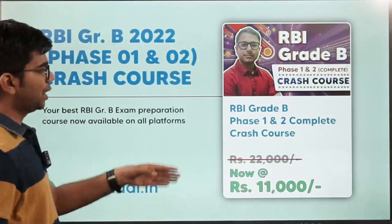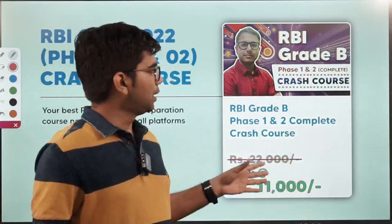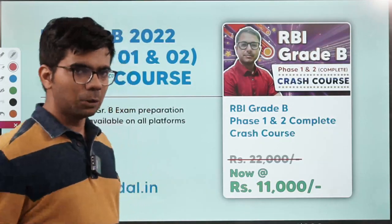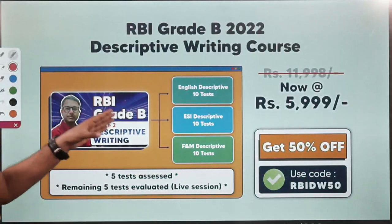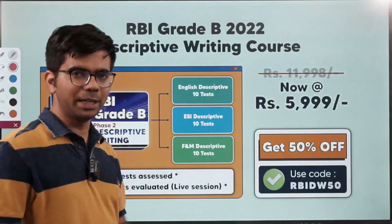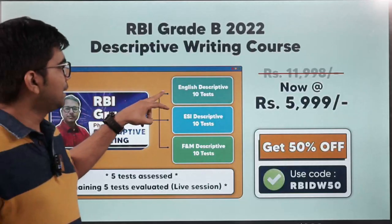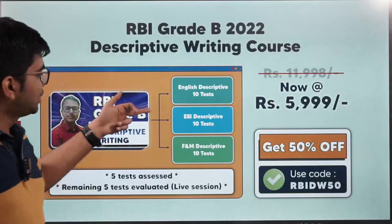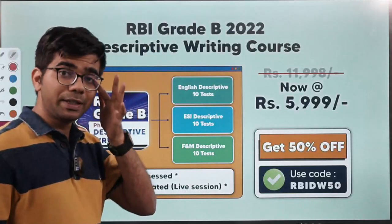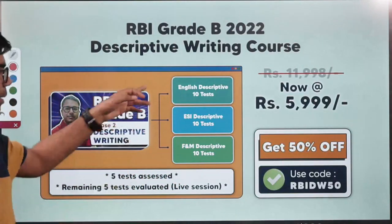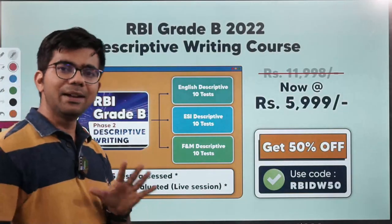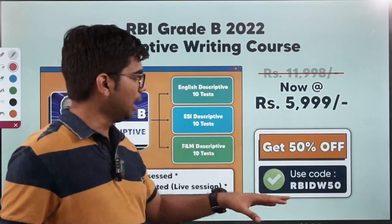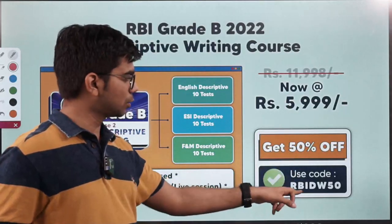Before we begin with the session, a very important piece of information: we are offering a complete crash course for RBI Grade B Phase 1 and Phase 2 at a very discounted price of rupees 11,000. We are also offering a descriptive writing course exclusively for Phase 2 RBI Grade B, comprising 10 English descriptive tests, 10 ESI, and 10 FM tests — 30 tests in total. Fifteen will be evaluated at the back end and the remaining five from each category evaluated in live sessions. This is available at a discounted price of 5,999, and you can avail a 50% discount using the code mentioned here.